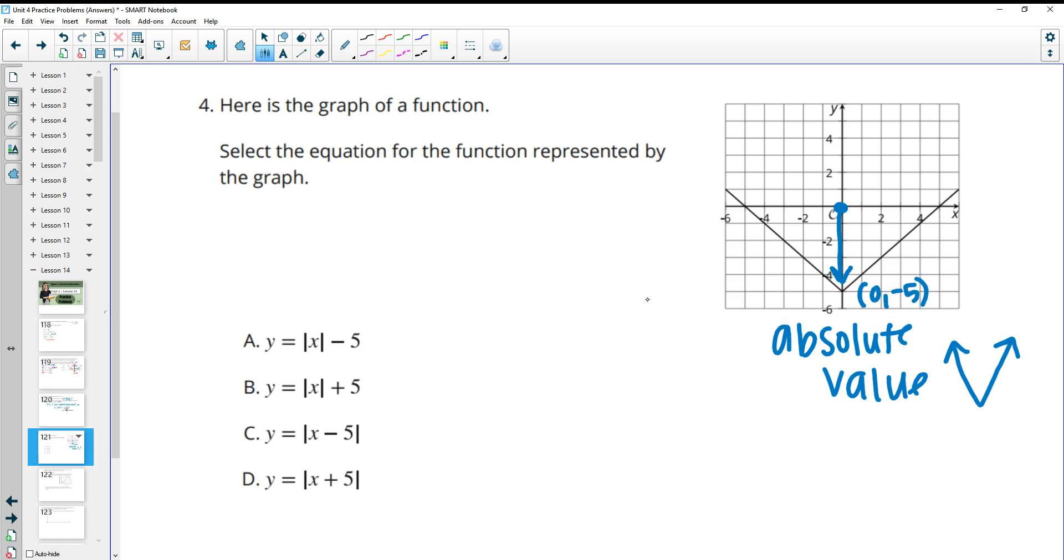And when we move up or down, remember that's outside of our function. So these two that have the numbers inside the absolute value are not going to be correct. And when it's outside, it looks exactly like we think it should. So if it moves down, it says minus. So a would be our answer to that one.